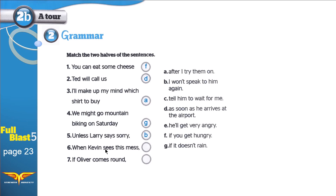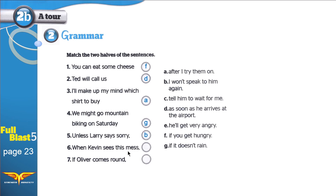Six: When Kevin sees this mess — mess means things are not organized. For example, you go to Kevin's room and make it messy. How will Kevin feel? He will get very angry. Seven: If Oliver comes around — comes around means visit. If Oliver visits, tell him to wait for me because I'm coming. I hope that you learned something today. If you like this video, please share it with friends. Goodbye and take care.